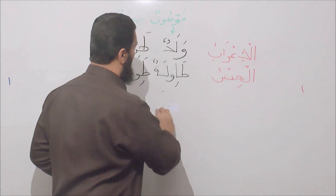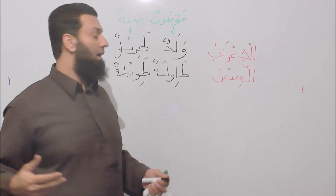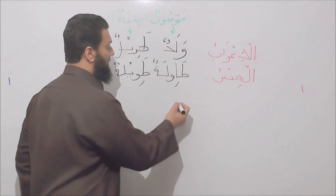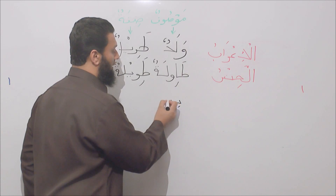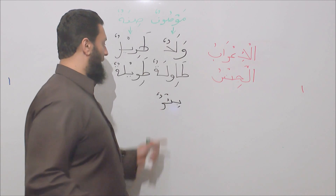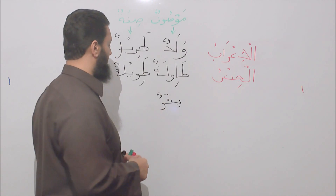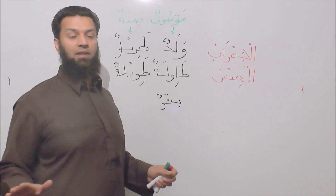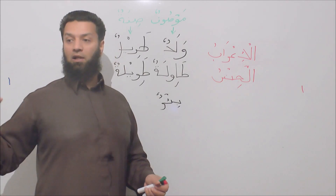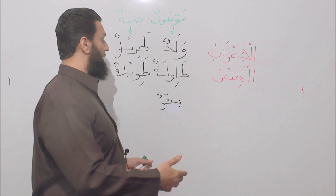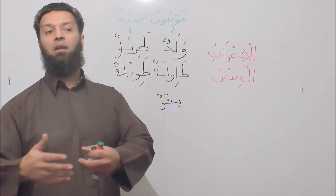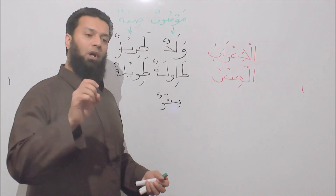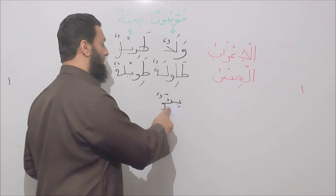There's another category of words that don't have a ta' marbuta on the end but are female, even without conveying a female meaning — such as bi'run, meaning 'a well,' as in a drinking well. This word is female, and one of the reasons we know this with certainty is that Allah mentioned in Surah Al-Hajj: wa bi'rin mu'attalatin — 'and a well that has been abandoned.' The sifatun mu'attalah has a ta' marbuta on the end, confirming that bi'run is a female word.